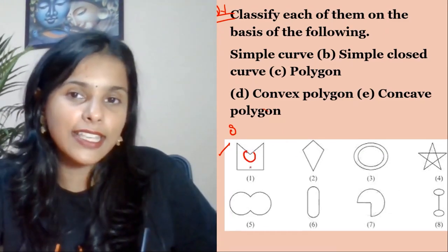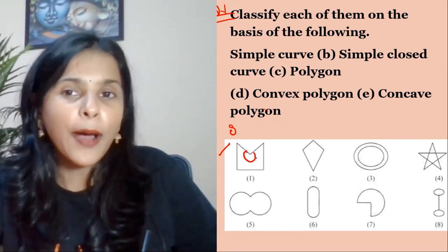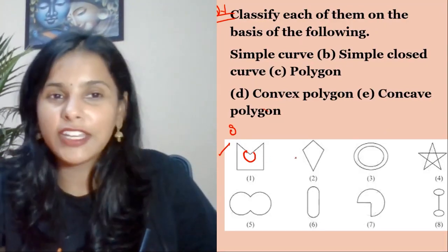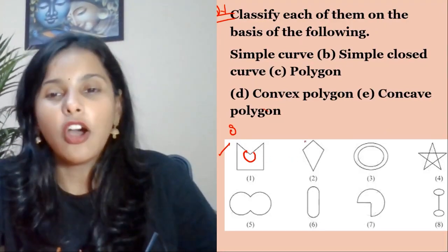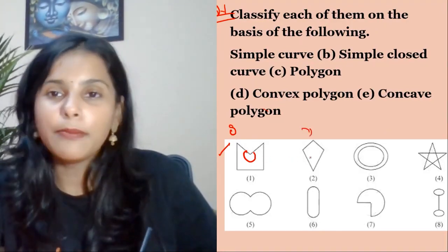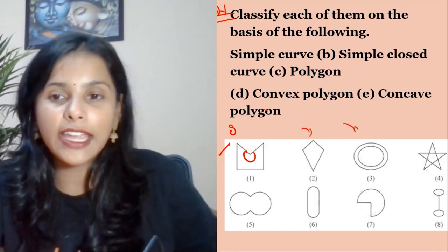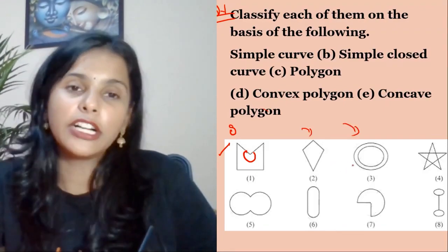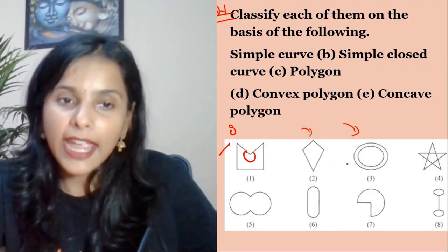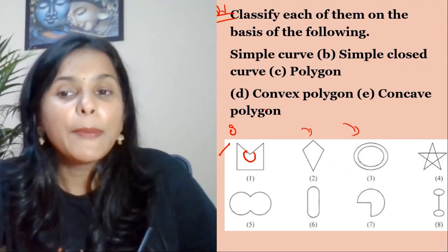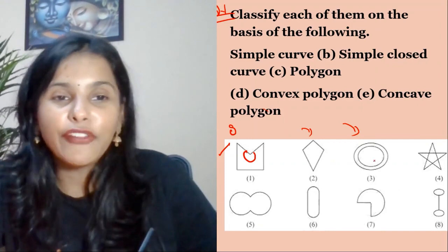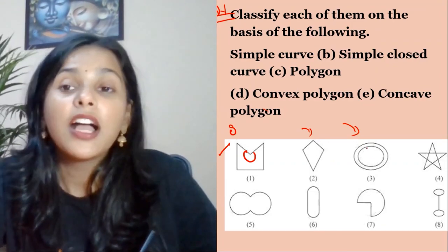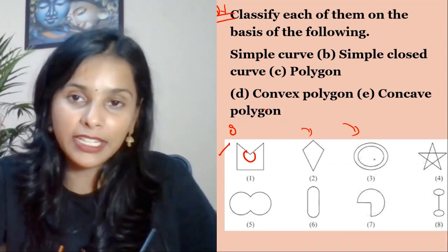Can I say that this is a polygon also? Definitely. So this is a simple closed curve. This closed curve is the same. But this is definitely not a polygon. Why?